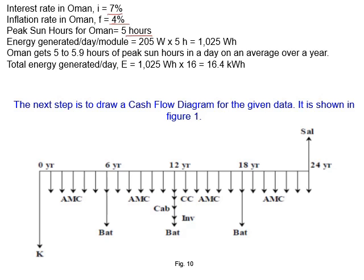Have a look at how we work on this example. First, each panel produces 205 watts. If I multiply it by five hours per day — the peak sun hours — it gives 1025 watt-hours per day per panel. If I multiply this by 16 panels, this is how much I produce daily: 16.4 kilowatt-hours. Before the calculation, let me show you the cash flow diagram.